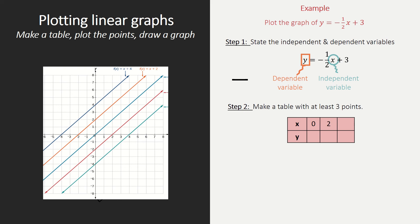I'm just going to choose x equals zero, two, and four. Since those are the independent variables, I need to put them up in my table, and I can choose whichever number I like.